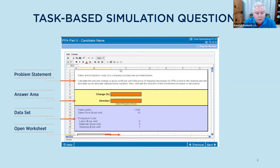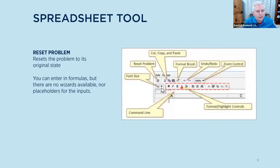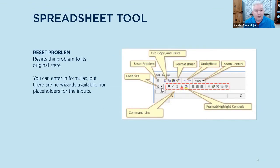Because the spreadsheet tool is not quite like Excel, there are some functions to go over. The command line is very similar to Excel — your font size, format brush, undo, and zoom control are very similar. One thing you'll notice that's different is 'reset problem': if you've accidentally deleted data or gone down a wrong path, you can reset back to the original state, but this will remove any of your calculations. As you work through the spreadsheet problems, you don't have to focus on the prettiness of the spreadsheet. It's just there for you to do your calculations. Once you've read the question, think about the fastest way to get from point A to point B and make those calculations.